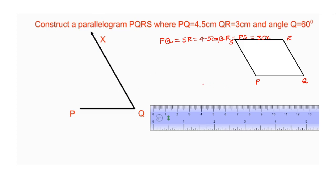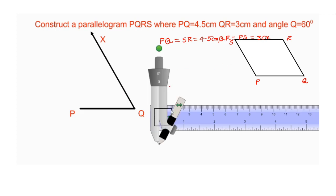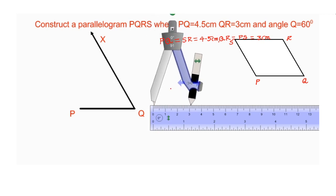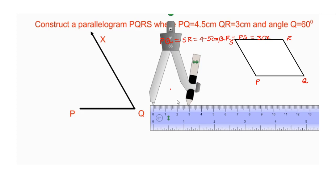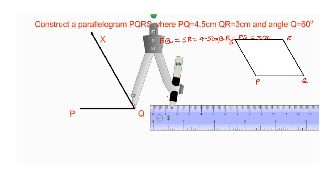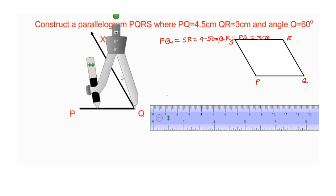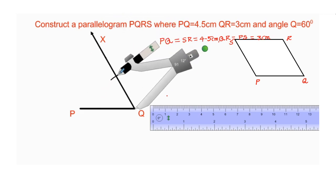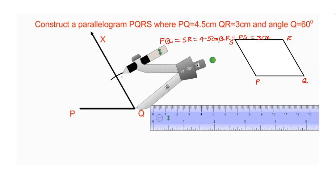Now, QR is given as 3 centimeters. Take a compass and measure 3 centimeters with the help of a scale. Put the needle of the compass on Q and draw an arc on ray QX. The arc intersects QX at R. This is the point R.